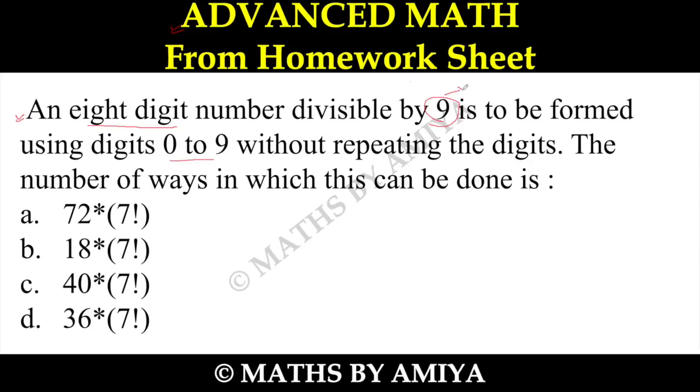So we know, first of all, 9 is nothing but the sum of digits rule. And we have 0 to 9—if we go for 0 to 9, you have 10 digit numbers and the summation is nothing but 45. We know this. We have to form 8-digit numbers, which means I have to remove 2 digits.